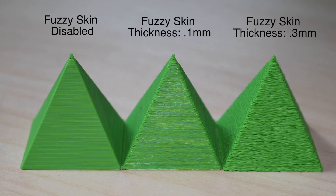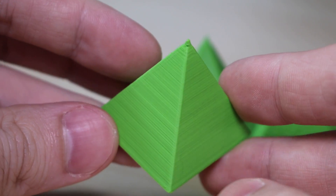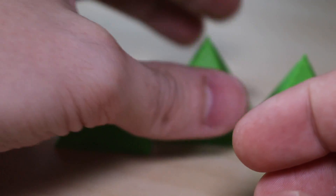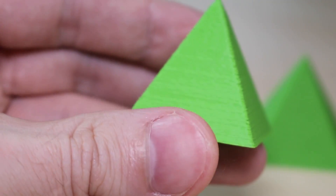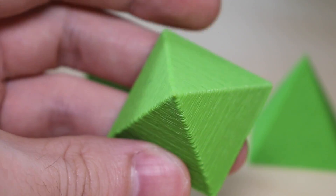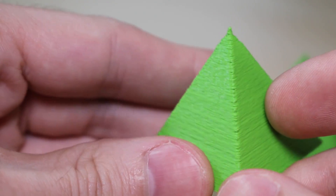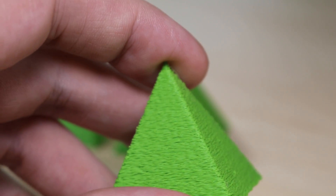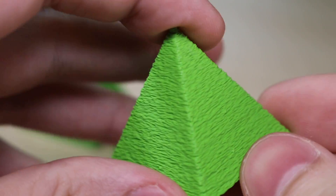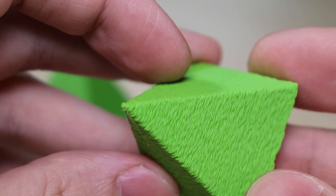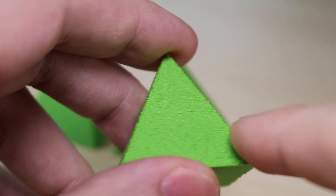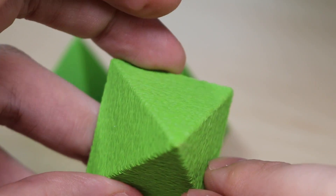This model was printed with fuzzy skin disabled, 0.1 and 0.3 millimeter thicknesses. Our control model had a little bit of banding but has a fairly clean vertical surface. The 0.1 millimeter thickness setting didn't look textured as much as it looked like a printer with some extrusion issues. The 0.3 millimeter model has a much clearer texture and it almost looks like a piece of textured kydex, a textured thermoplastic known for its grip. Overall the surface is very uniform and has the appearance of a quality texture.